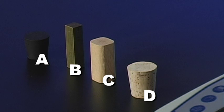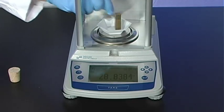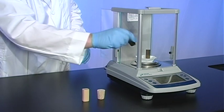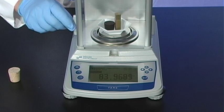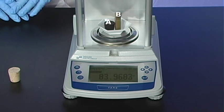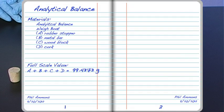Next, weigh items A and B together. The combined mass of items A and B is 83.9690 grams. Record this value in your lab notebook.